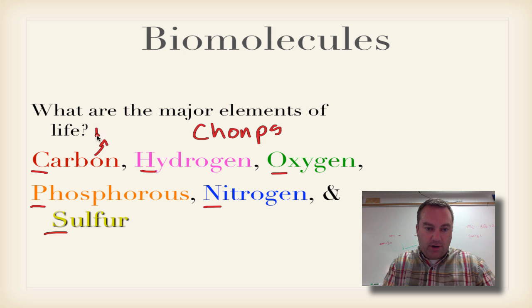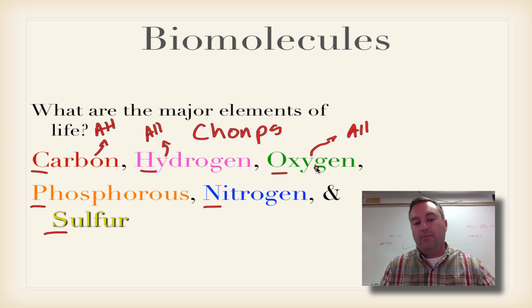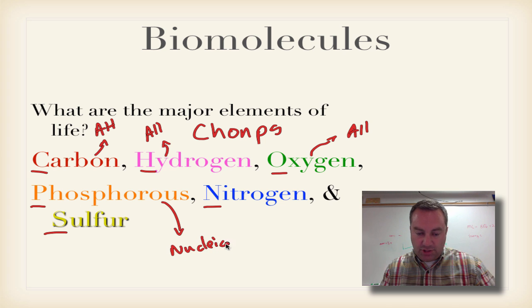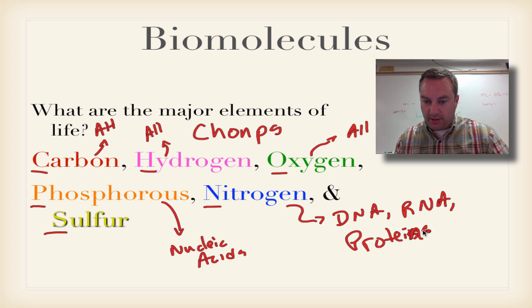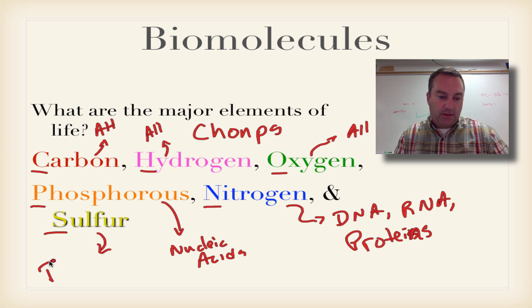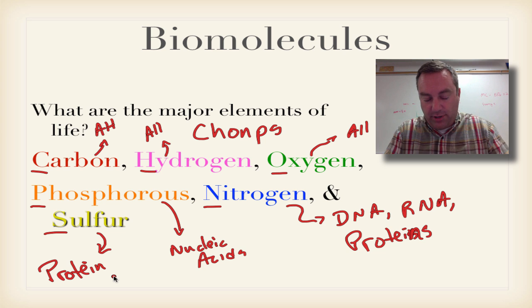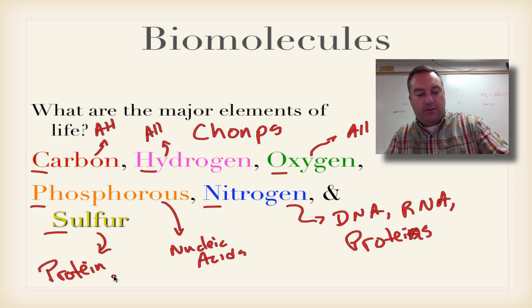Carbon, hydrogen, and oxygen are going to be found in all biomolecules. Phosphorus you're going to find mainly in nucleic acids such as DNA and RNA. Nitrogen you're going to find in DNA, RNA, so nucleic acids, and you're also going to find those in proteins. And sulfur, that's mainly a protein thing. So these are where you're going to find them in the four biomolecules.